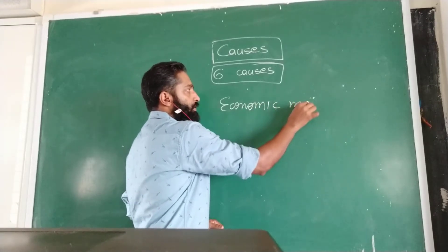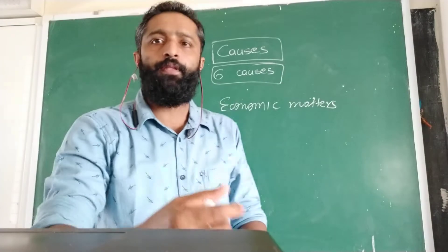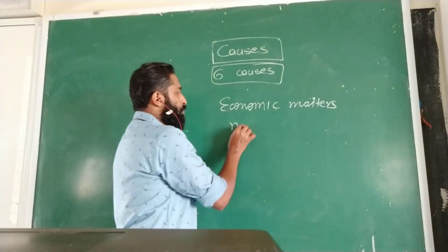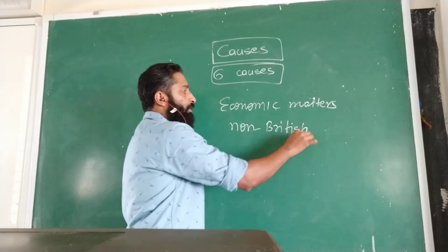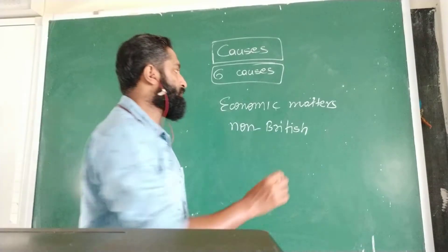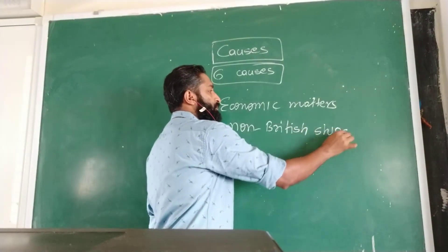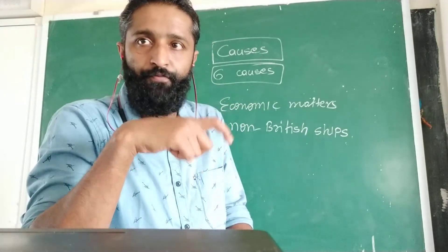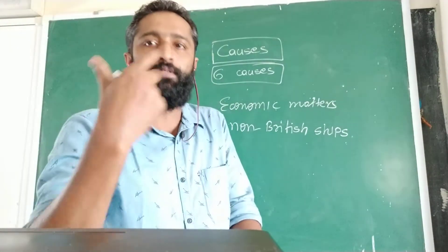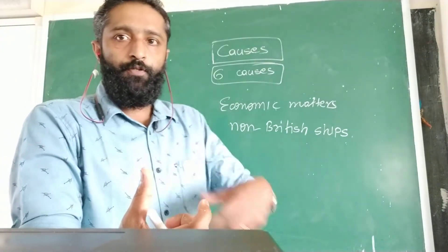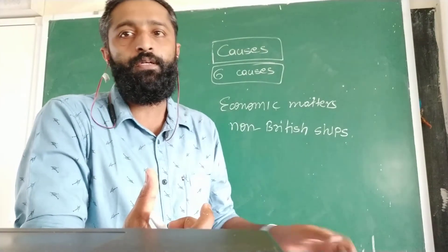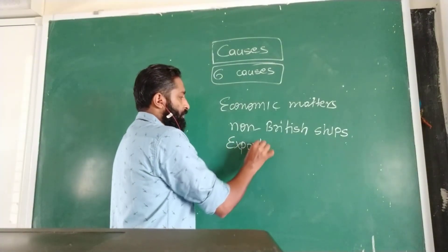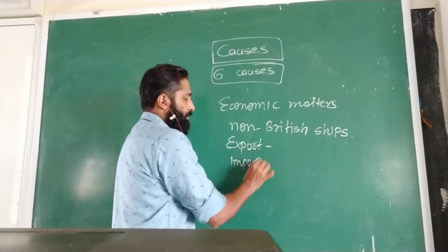The economies of the colonies were controlled by the British people. How did they control them? The first thing is that they were not allowed to use non-British ships. This means if the colonies wanted to use a ship, it had to be a British one. They were forbidden to use non-British ships for trading purposes. If the colonies wanted to trade using their own ships or the ships of another country, it was forbidden.